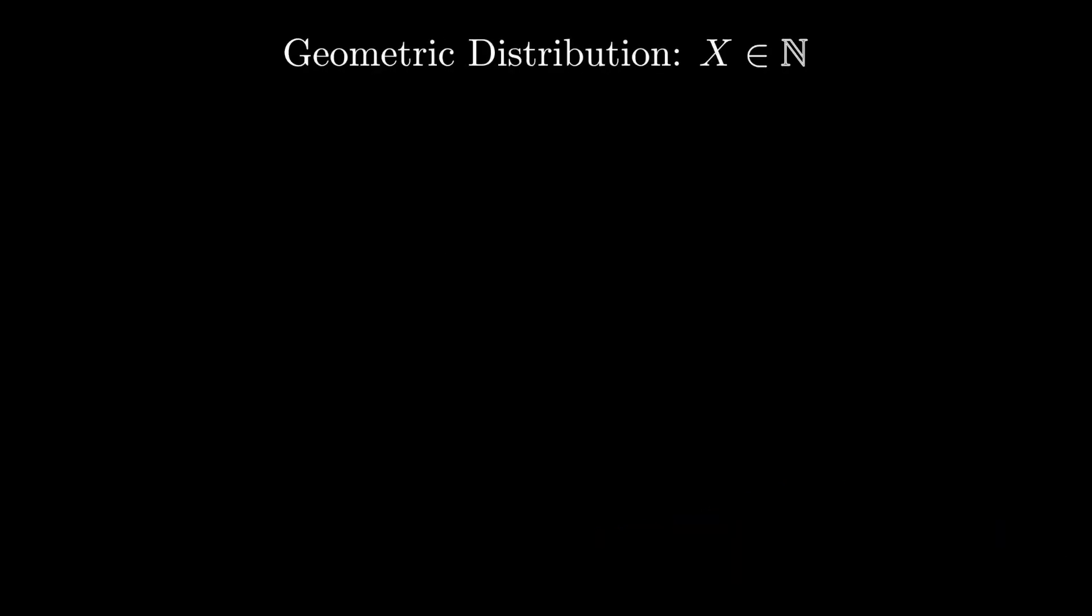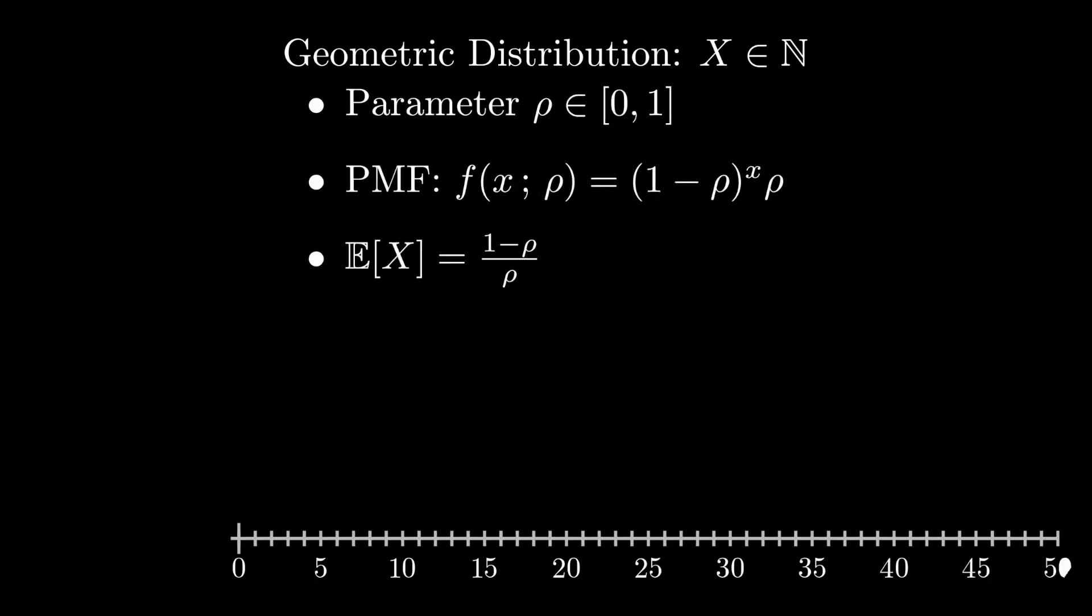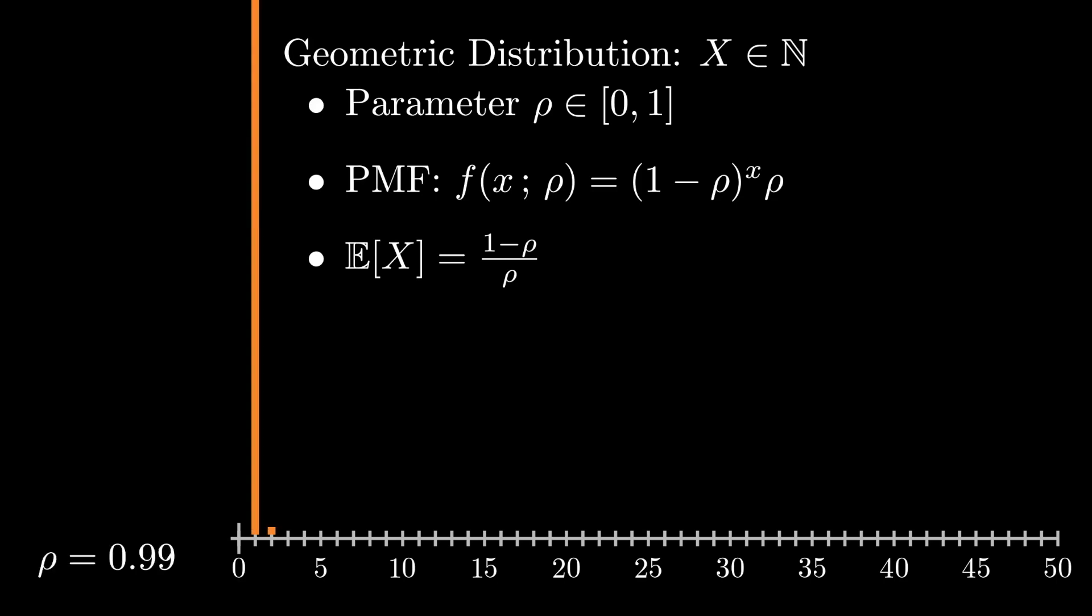Another distribution with support over the non-negative integers is the geometric distribution. Like the binomial, you can think of this as arising from a sequence of Bernoulli random variables. In this case, it corresponds to the number of coin flips that you need until you get to your first heads. Like the Bernoulli, it has a single parameter rho.